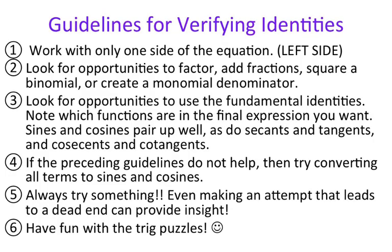There are guidelines for verifying identities — these are the steps you should follow. Step one is to work with only one side of the equation, and that is the left side. You are never going to manipulate the right side; your goal is to get that left side to equal the right side. Step two is to look for opportunities to factor, add fractions, square a binomial, or create a monomial denominator — basically using all your algebraic skills to simplify your expressions as much as you can.